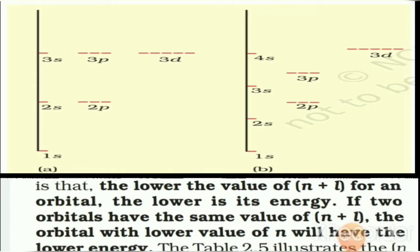Next, consider 3p and 4s orbitals. The n+l value for 3p is 3+1 = 4, and for 4s it is 4+0 = 4. Both have the same n+l value. In such a case, the orbital with the lower n value has lower energy. Since 3p has n=3 and 4s has n=4, the 3p orbital has lower energy than 4s.